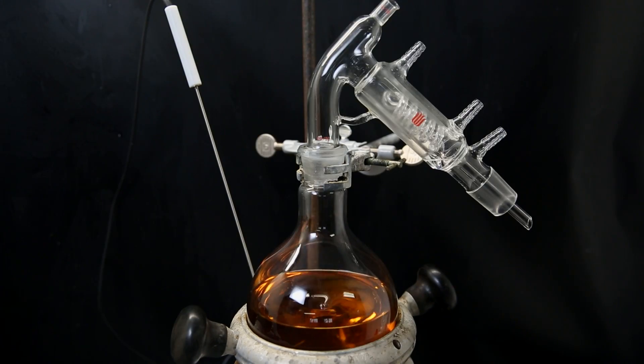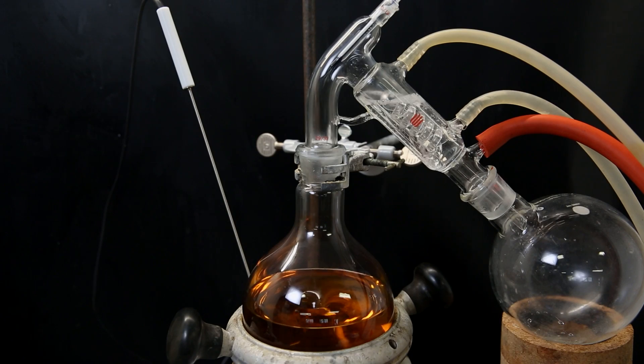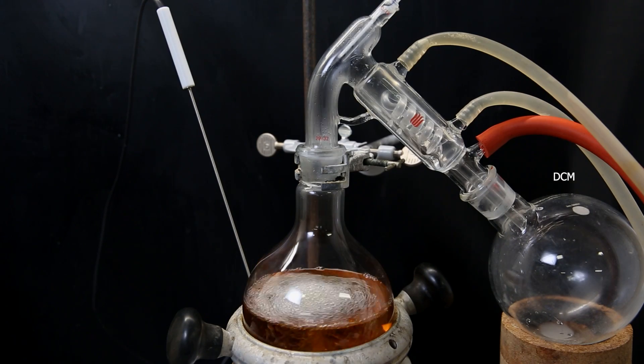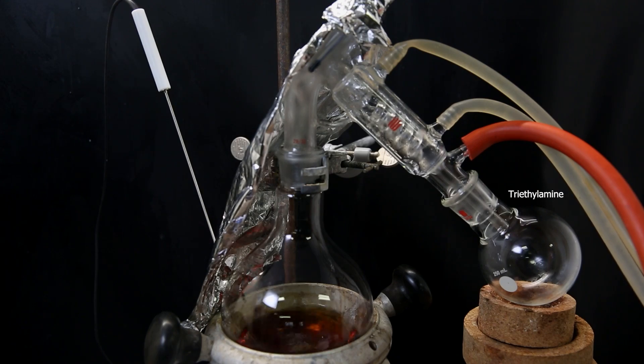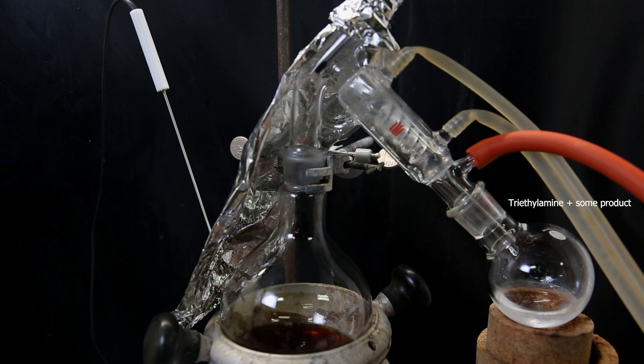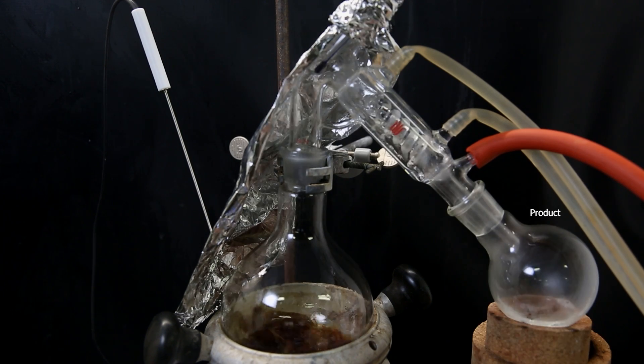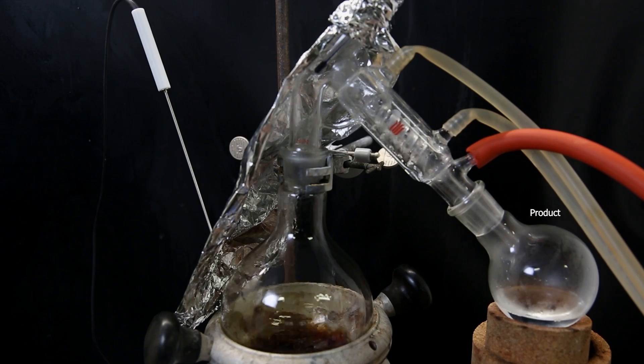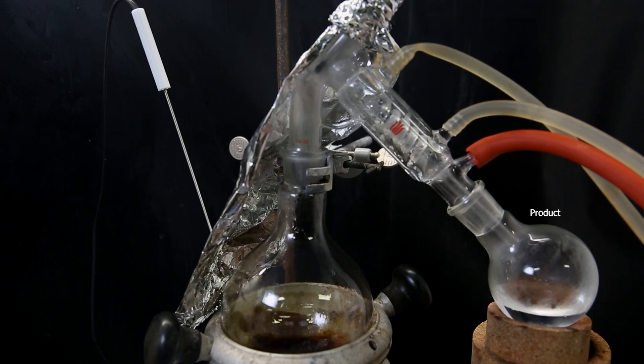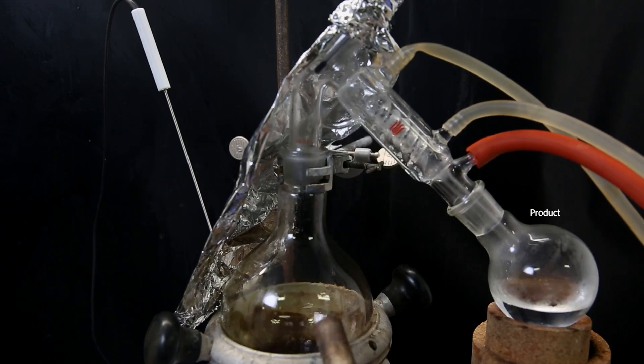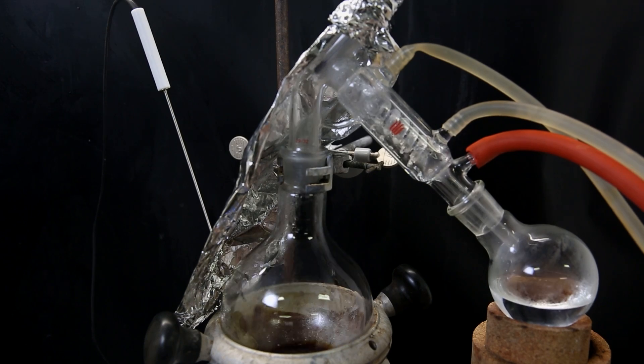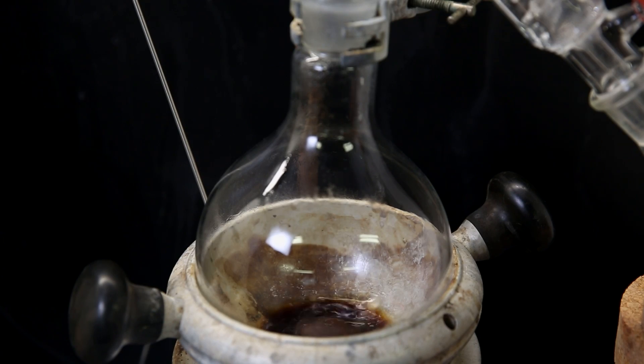Now I set the filter up for short-path vacuum distillation, to first remove all of the DCM. Later on, when the DCM is gone, I increase the temperature, and triethylamine starts distilling over. After a while, some of the product starts distilling over. So I swap the receiving flask again, and start collecting it. I increase heat, and pull a stronger vacuum, and it all distills over easily. When all of it had come over, only some red liquid is left behind in the flask, which I discard.